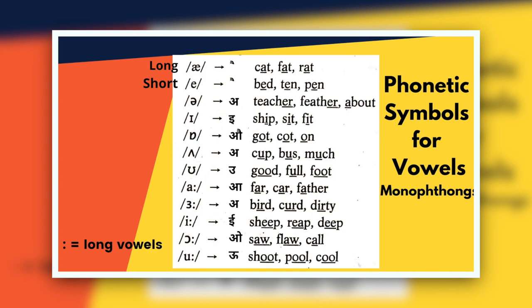The next symbol is for the long EE sound, as in sheep, reap, deep. The second last monophthong is for the long AW sound, as in saw, flaw, call. The last one is for the long OO sound, as in shoot, pool, cool. Let's give a quick revision to all the monophthongs we have studied so far.